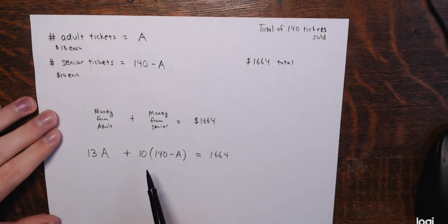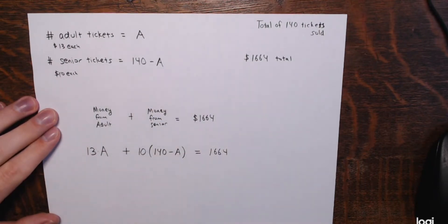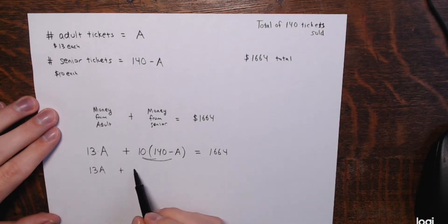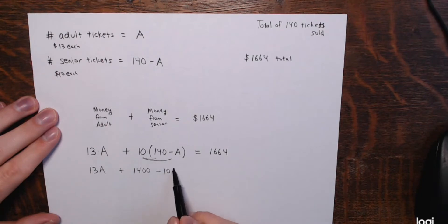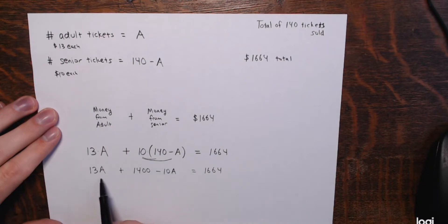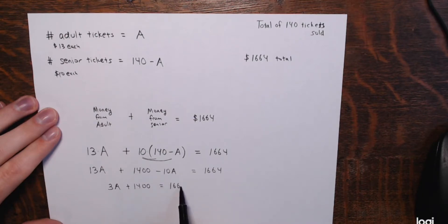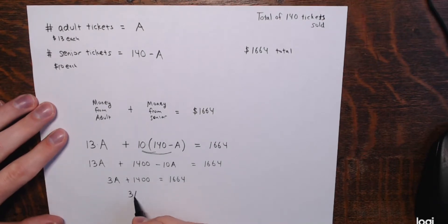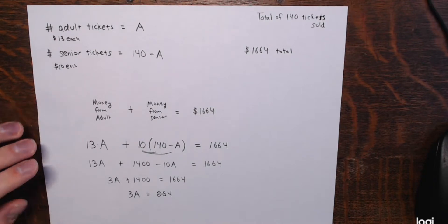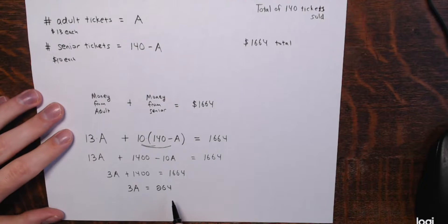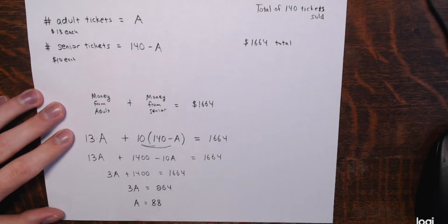Solving for A: distributing the 10 gives 13A + 1,400 − 10A = 1,664. Combining like terms gives 3A + 1,400 = 1,664. Subtracting 1,400 from both sides gives 3A = 264. Dividing both sides by 3 gives A = 88. Let's check: 3 times 88 is 240 plus 24, which is 264. So A equals 88.